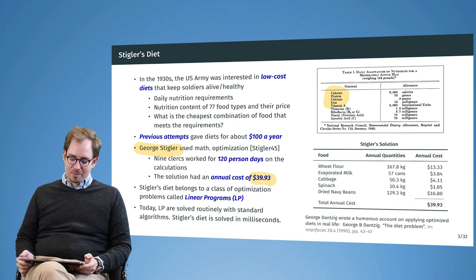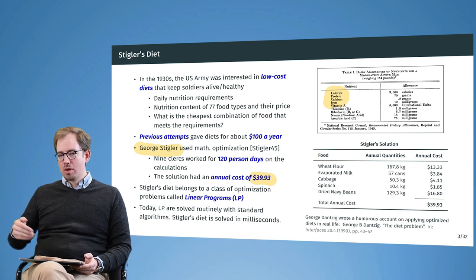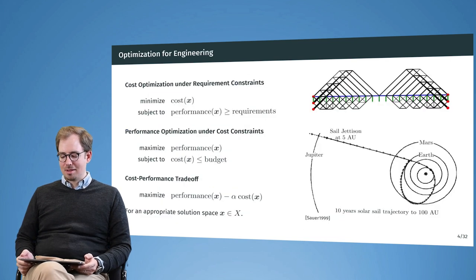There's a somewhat funny account of that, a paper by George Dantzig where he recalls during the development of the optimization algorithms how he told his wife to cook him daily a meal with the results from his computer and the different mishaps that were generated.